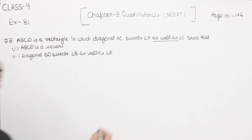Now, angle number 5 is equal to angle number 8, because 5 is equal to 6 and 6 is equal to 8 — by equations 1 and 3. Therefore, BD bisects angle B as well as angle D. With this, we have completed question number 8. In the next video, we are going to start with question number 9.